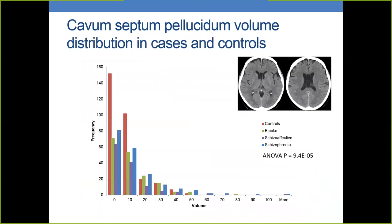The second hit from the GWAS was the cavum septum pellucidum. The cavum septum pellucidum is a space between the leaflets of the septum pellucidum that normally occludes in 85% of babies by the sixth month. Its persistence has been related to neurodevelopmental delay, schizophrenia, and bipolar disorder, presumably because of a reduction of the limbic structures that surround it — the septal nuclei, the fornix, and the hippocampal commissure.